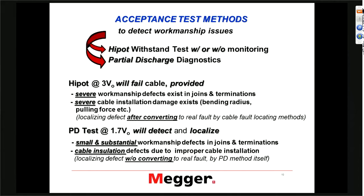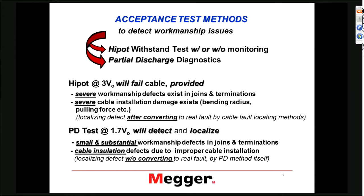Today, for the most part, the DC hypot test is superseded by the VLF type AC hypot test. That had to do with the fact that we are dealing with solid dielectric cables, which don't take very well to DC hypotesting. If we do a regular hypot test according to IEEE 400.2, the voltage specified is 3 per unit, where V0 is the phase voltage to ground. That is typically the voltage specified for a 0.1 Hz VLF test set.